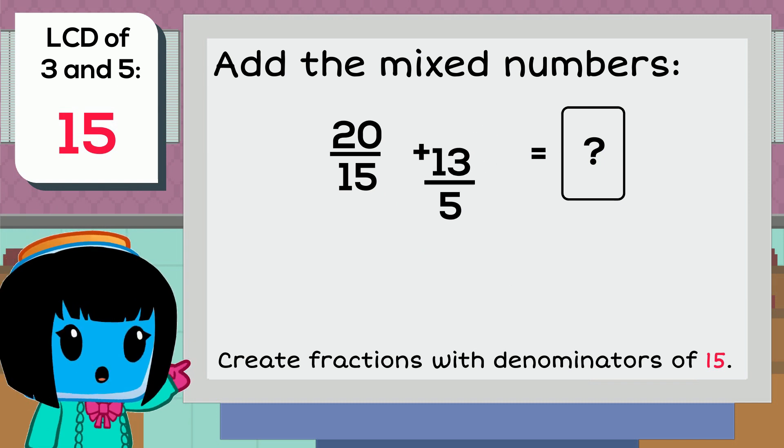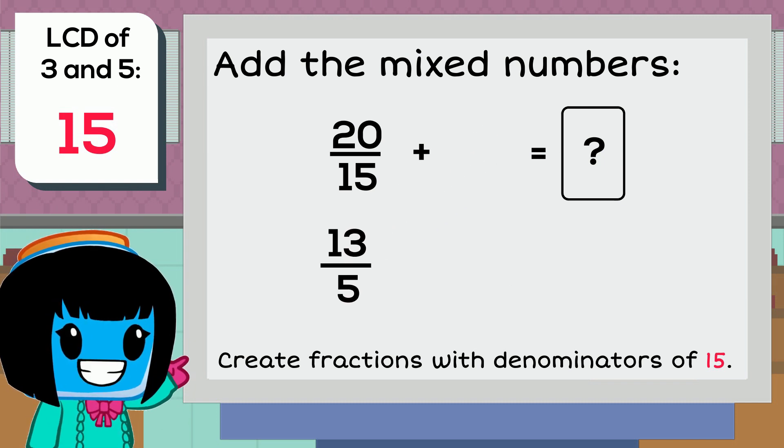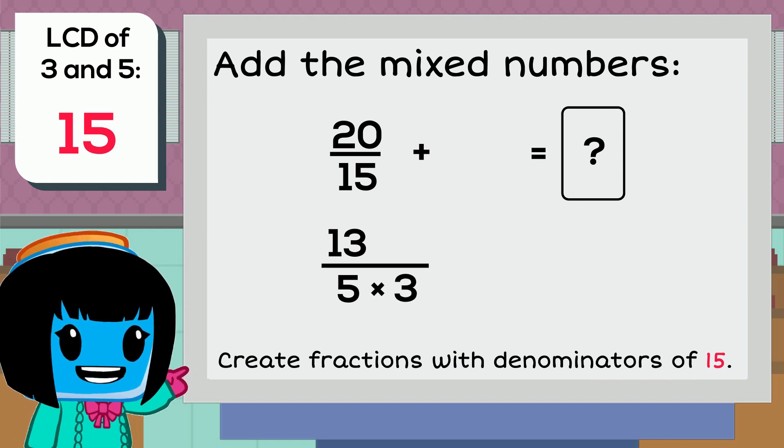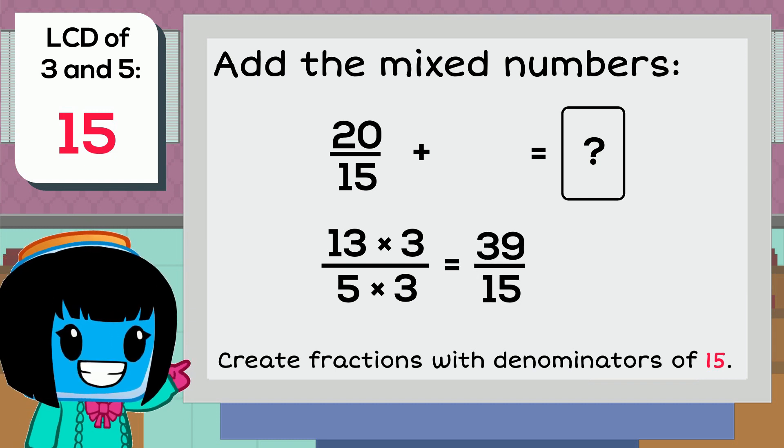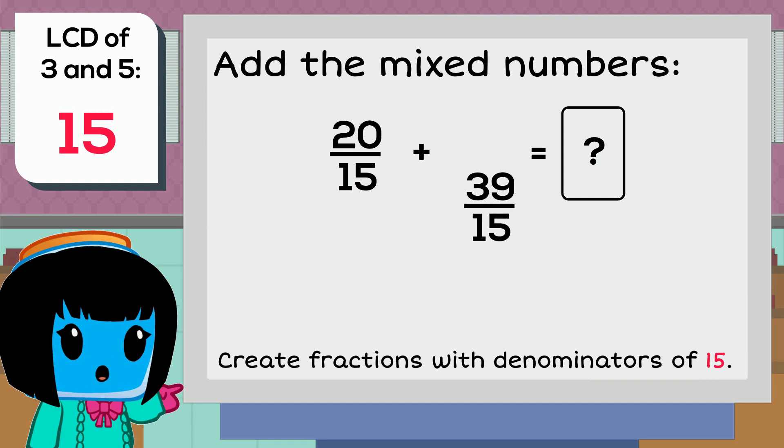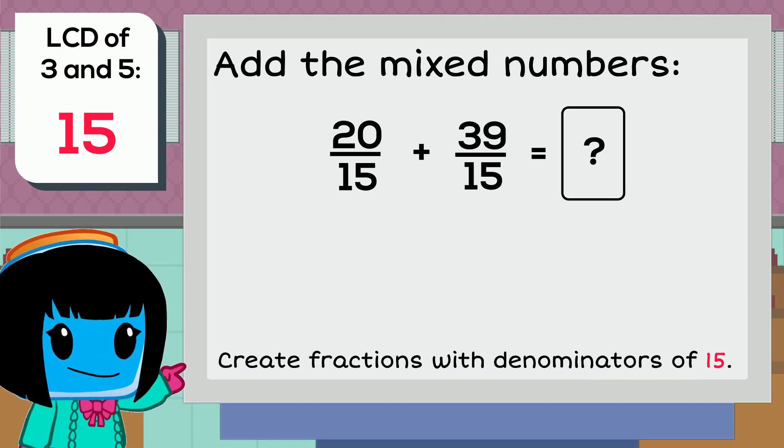For the second fraction, 13 fifths, we multiply the 5 in the denominator by 3 to get 15. Whatever we do to the denominator, we also do to the numerator. So we multiply 13 by 3, and that gives us 39. So, our equivalent improper fraction becomes 39 fifteenths.